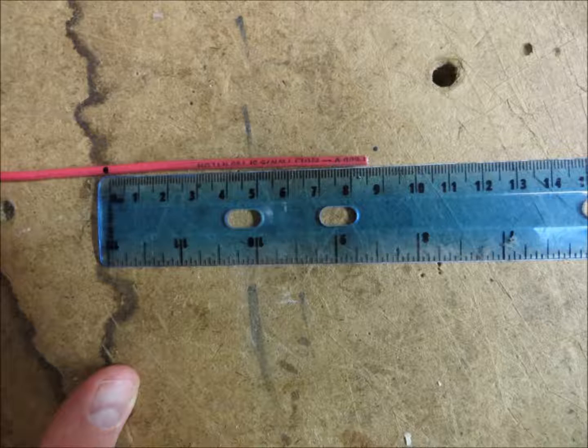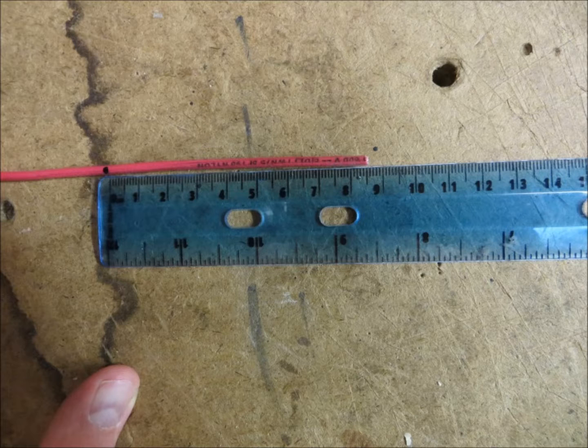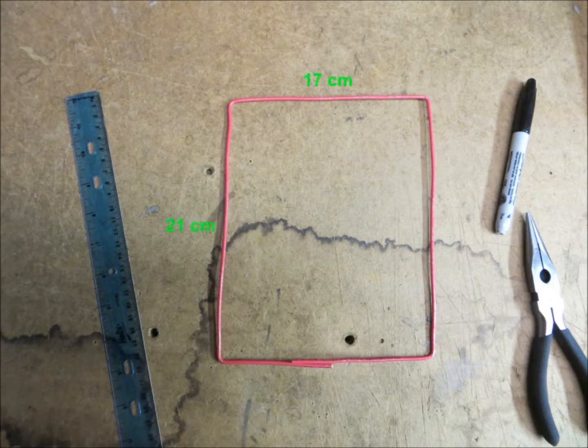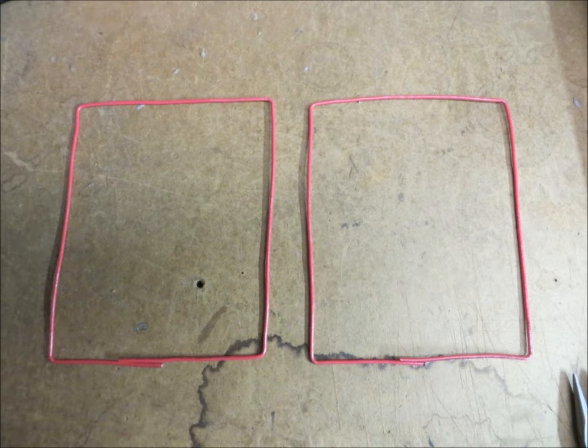Next, he put a dot 8.5 millimeters in from each edge of the wire. This would become the first bend. He then measured 21 centimeters, then 17 centimeters, then another 21 centimeters, placing dots at each. Next, he bent the wire into the shape of the rectangle at those dots to form the first driven element. Rinse and repeat for the other driven element.